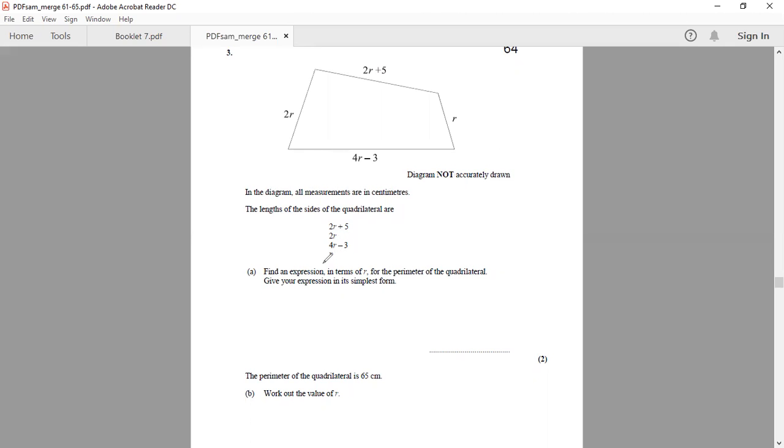I will actually get 2R plus 2R plus 4R plus 4R will give me 9R. And 5 take away 3 will give me plus 2. 9R plus 2 is an expression for the perimeter, which I get by adding all of the four sides of the shape.